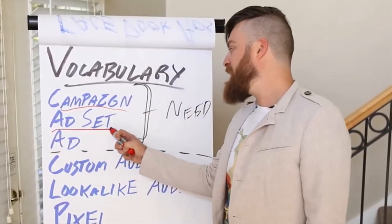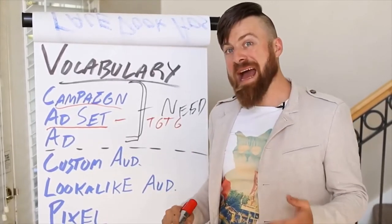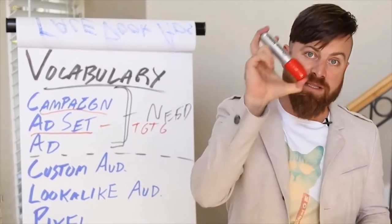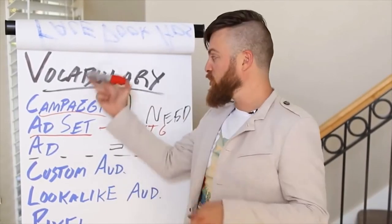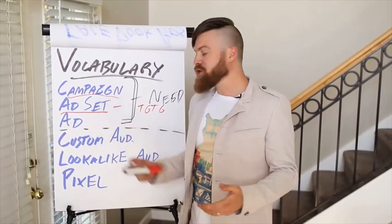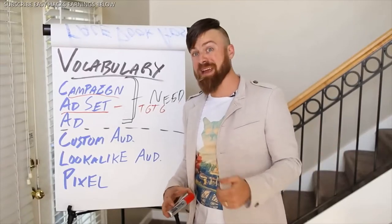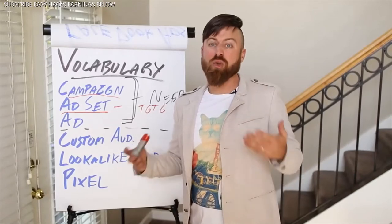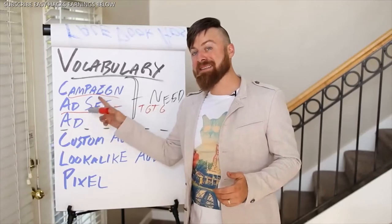The next is an ad set. An ad set is where all the magic happens — it's where you define the targeting for the ad and who the ad gets shown to. If I'm selling markers, I'd need to target people who are interested in markers, use whiteboards, do presentations, or maybe teachers. If you're showing ads for dog toys to cat people, you're not going to make any money. A lot of stuff happens on the ad set level — the targeting.